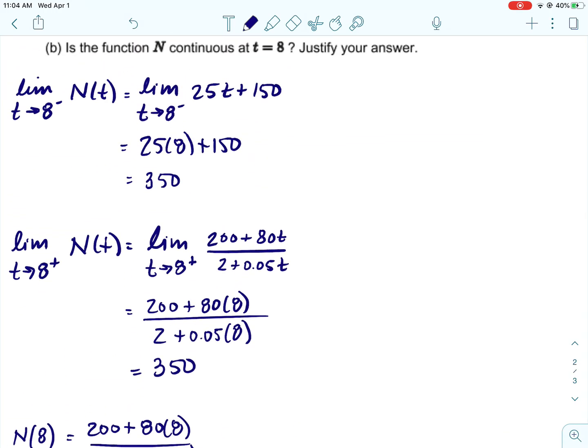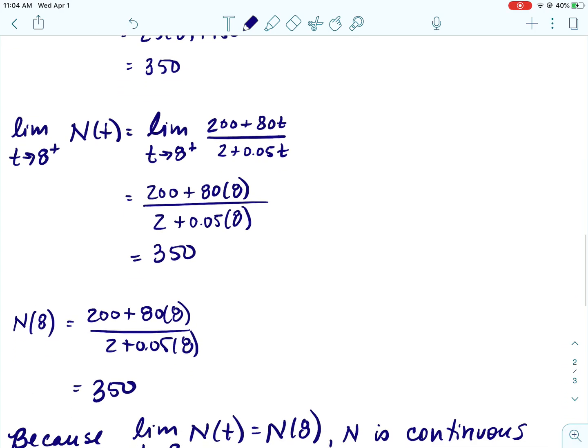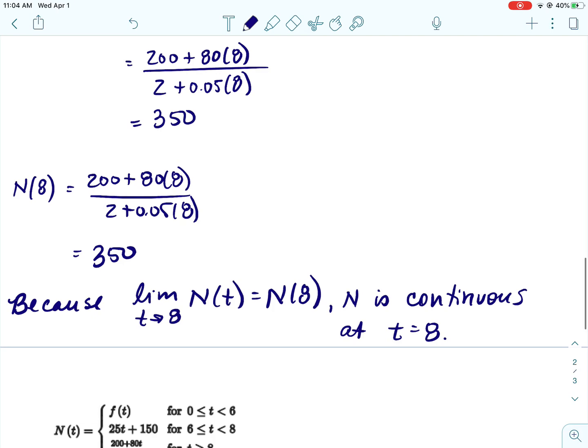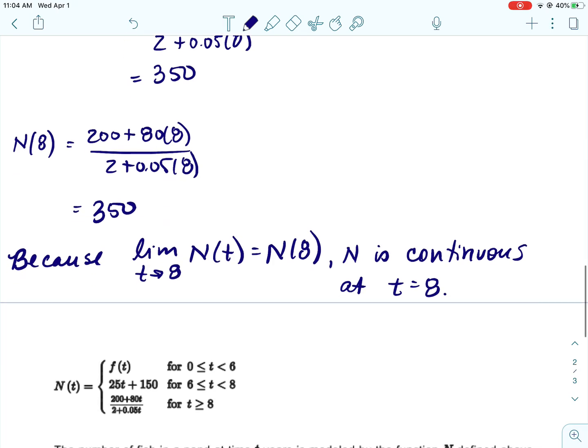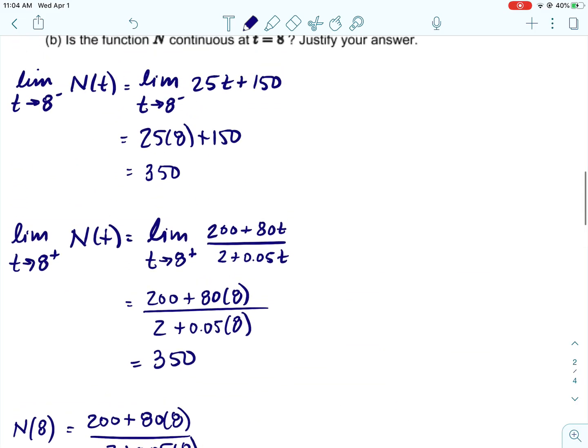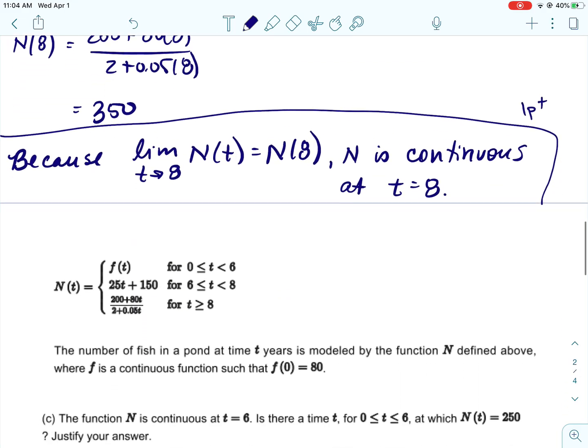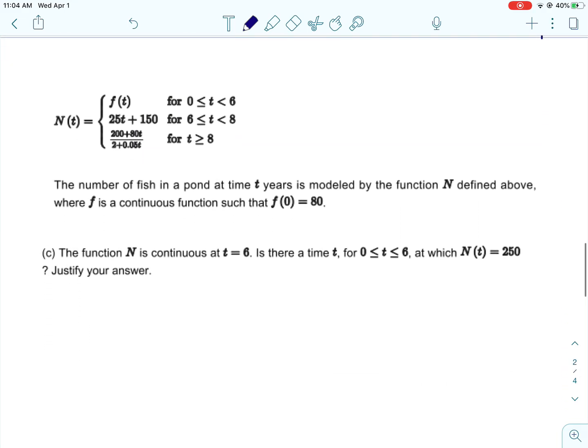Now, if you write it longer, like I did on my sheet that I posted for you guys, I said that the limit as t approaches 8 from the left of N(t) equals the limit as t approaches 8 from the right of N(t) equals N(8). That's fine too. Both of these are fine. So that's one point, and then each one of these limits is one point.